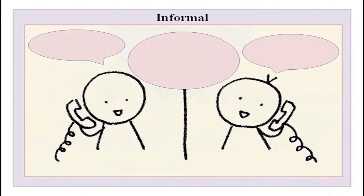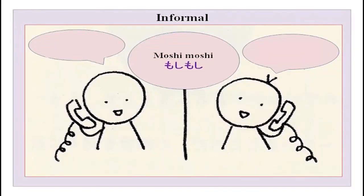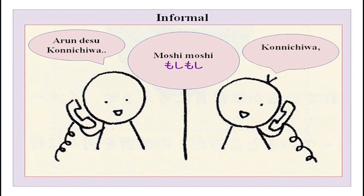If you are talking informally to someone — you ring up your friend — you would say moshi moshi first, and then watashi wa Arun desu, or just Arun desu, as in this conversation. Then konnichiwa. The other person will also tell his name and konnichiwa. So this is a very informal way of talking on the phone.